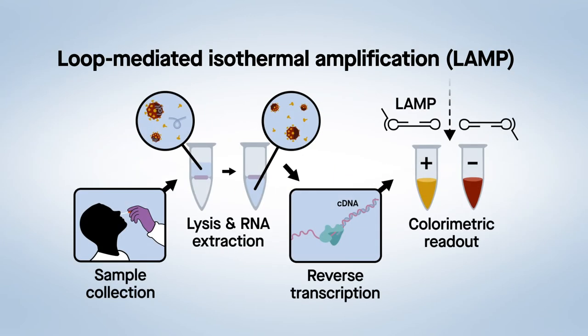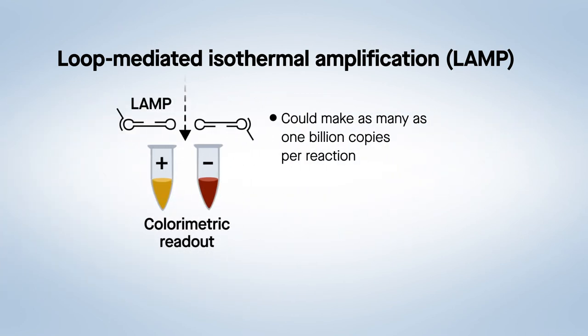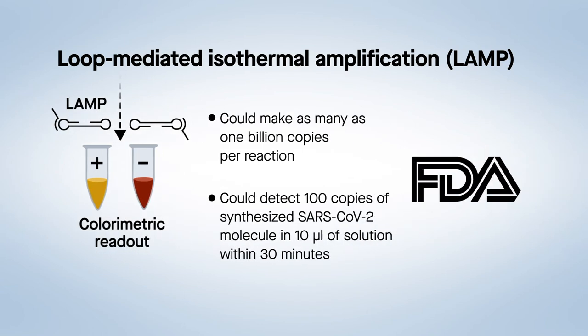First, the authors used Loop-Mediated Isothermal Amplification, or LAMP. LAMP is a cost-effective technique that mixes biomolecules called primers with swab samples, so they can make copies of certain nucleic acid fragments corresponding to SARS-CoV-2. The authors could make as many as one billion copies per reaction, and they found that they could detect as few as 100 copies of a synthesized SARS-CoV-2 molecule in 10 microliters of solution within 30 minutes. This result is in accordance with the requirements set by the U.S. Food and Drug Administration.